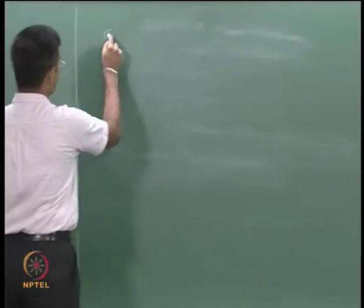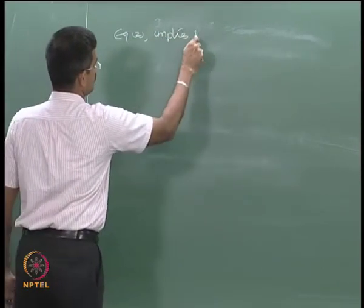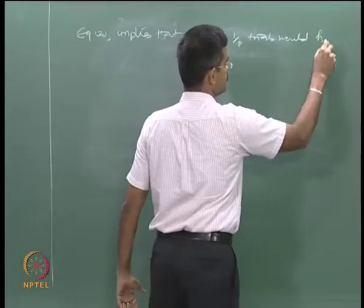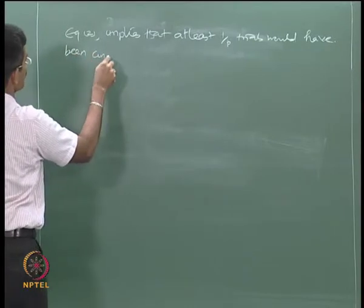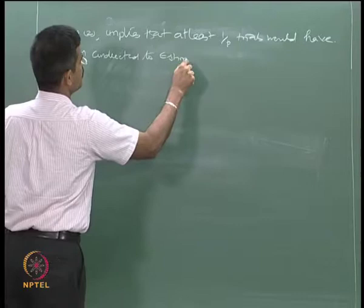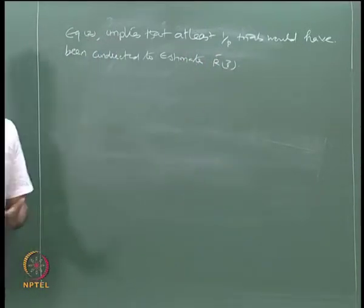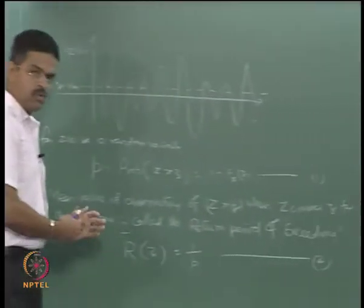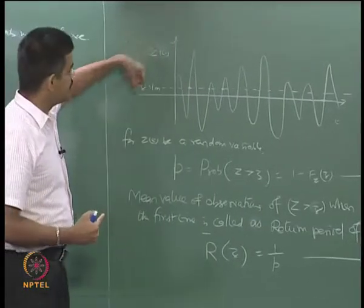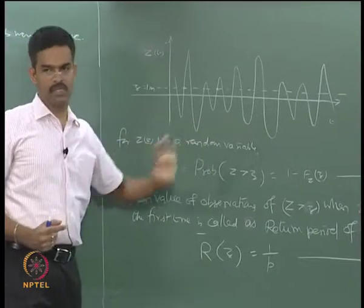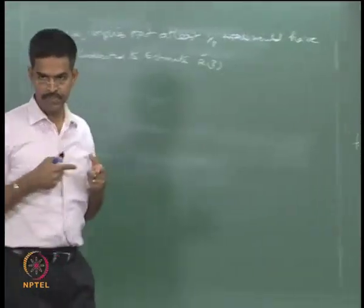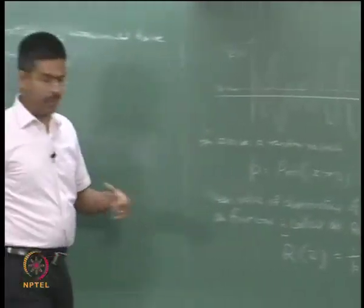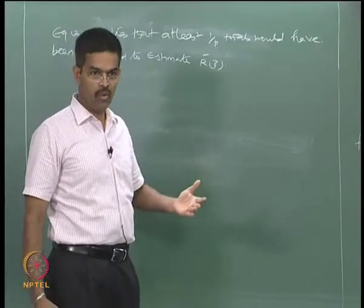Equation 2 implies that at least 1/P trials would have been conducted to estimate R(z). You need at least 1/P trials, otherwise you cannot take the mean. So here in the return period of exceedance, we are talking only about the probability of the variable exceeding a pre-agreed value in a given record length capital T. Can I convert this argument onto a time frame? One is always interested in explaining return period on a time frame, but here return period is not on a time frame — it is exceedance of a specific pre-agreed value.